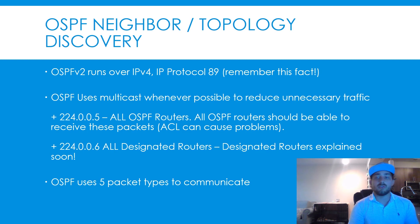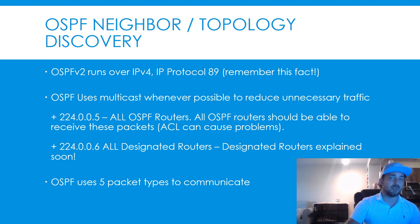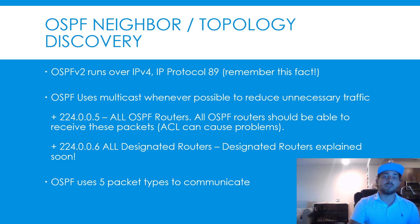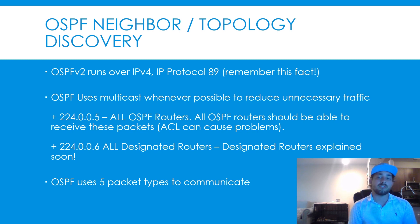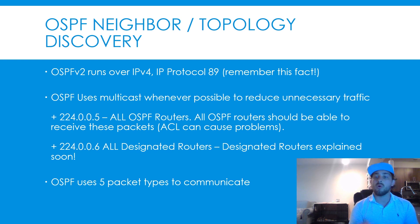OSPF v2 runs over IPv4 and uses IP protocol 89. This is one of those facts you'll just want to commit to memory. To send and receive updates about the network and form adjacencies, OSPF uses multicast traffic whenever possible. The two addresses you need to memorize are 224.0.0.5, which is all OSPF routers.